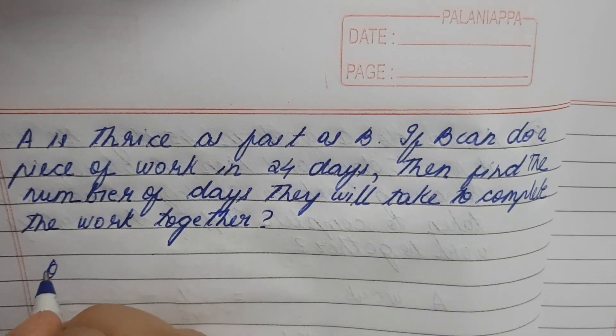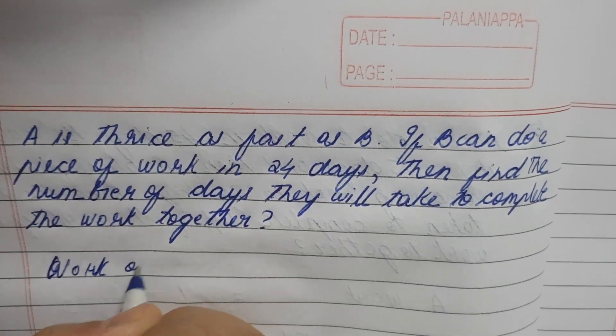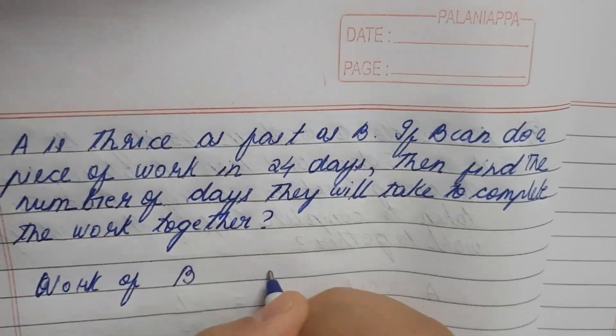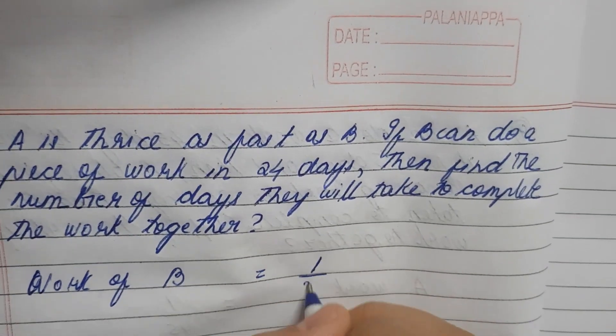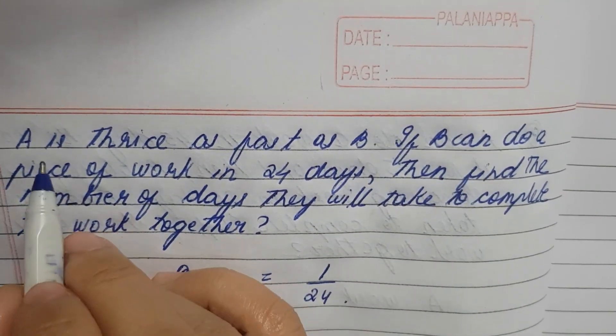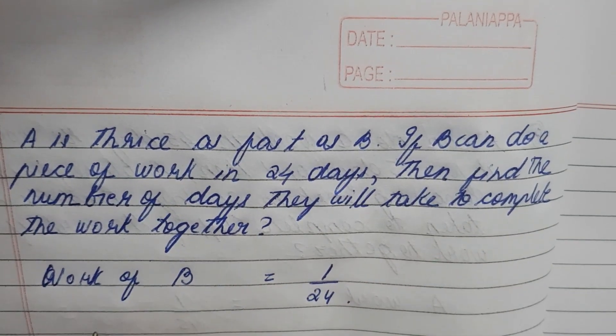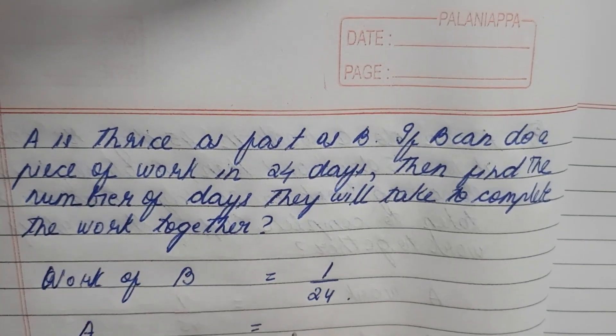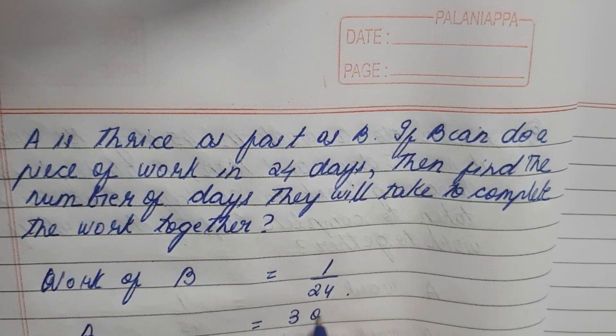Work of B is equal to 1 by 24. A is thrice as fast as B. A is equal to 3 times of B.